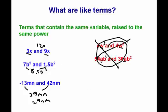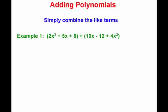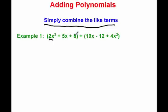So let's look at what it means to add some polynomials. All we're going to do is combine the like terms. We're going to go through starting at our biggest exponent and just find matching like terms and put them together. Starting with 2x cubed in the polynomial 2x cubed plus 5x plus 8 — if I look over at the other polynomial, there is no x cubed term, so there's no like term for 2x cubed. I'm just going to write down 2x cubed by itself.